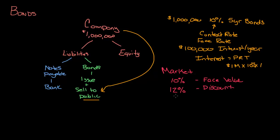Now, what if the market rate was 8%? If everybody's getting 8% on their investments but we're offering 10%, people are going to want those bonds because they get a higher rate of return. So if the market's 8% and we're paying 10%, that creates a lot of demand and therefore puts a premium on our bonds — people would be willing to pay more than face value. Market rate is really important when looking at bonds, because in the next couple of videos we're going to determine how to figure out if a bond will sell at face value, at a discount, or at a premium, and how much that amount will be.